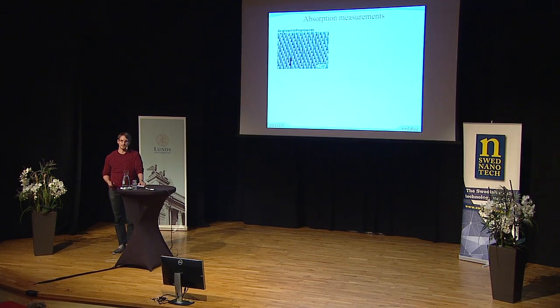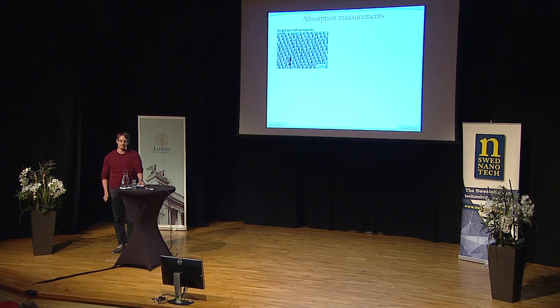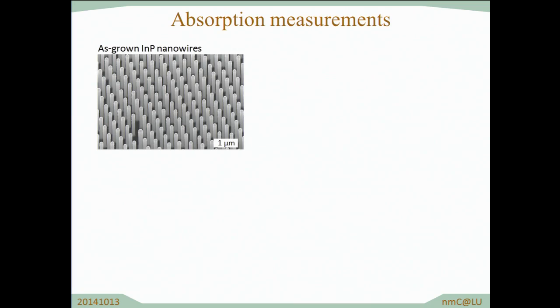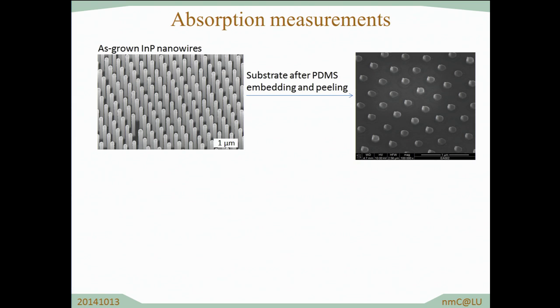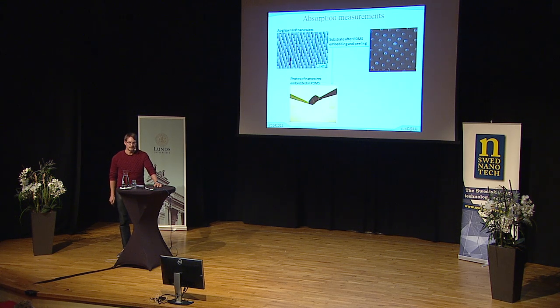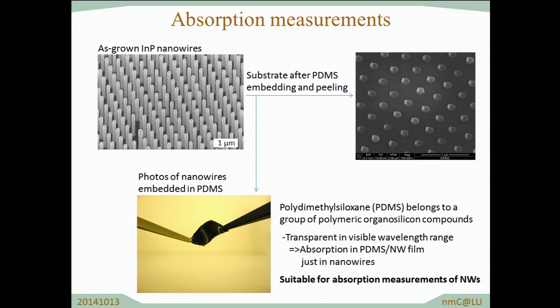In this way we have total freedom in defining the diameter and the length of these nanowires. Now after the fabrication of these nanowires we want to check the absorption. Since we know that they should absorb well, we do this experimentally. To measure absorption we actually peel them off from the substrate because the substrate doesn't let any light through. So what we do is embed the nanowires in PDMS, which is a transparent material, and we rip off this film from the substrate — and it becomes completely black, so it doesn't let light through. Whatever is absorbed in this film is absorbed in the nanowires, and we can characterize the absorption in the nanowires.